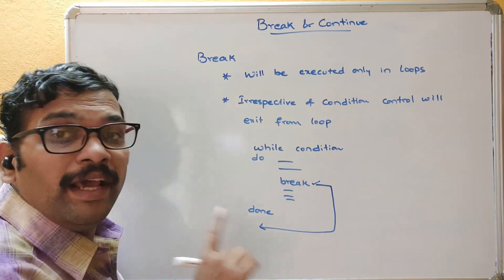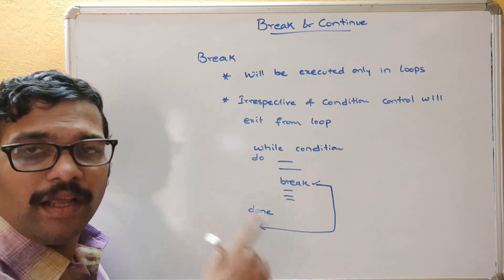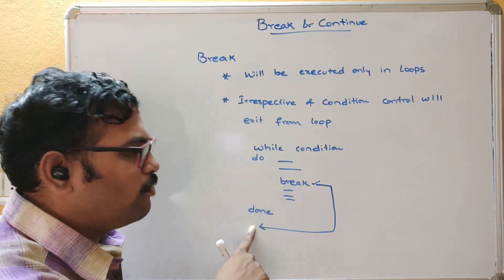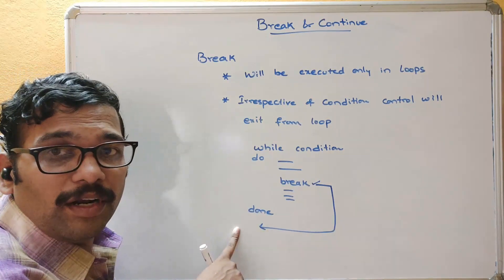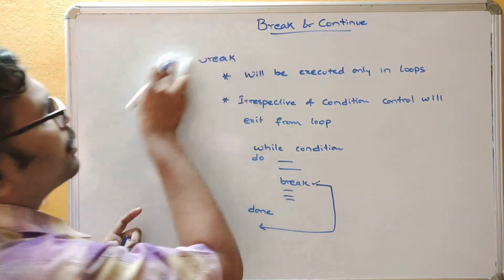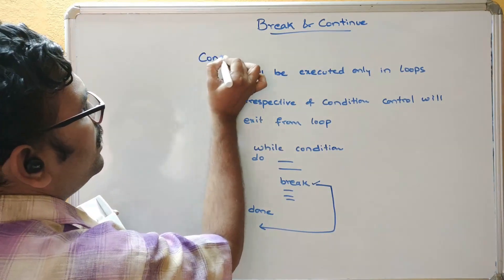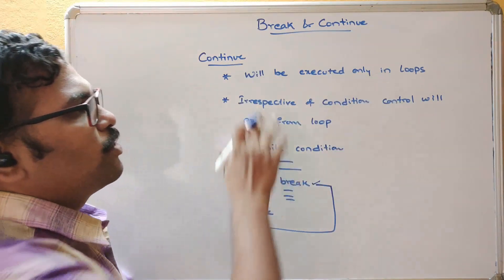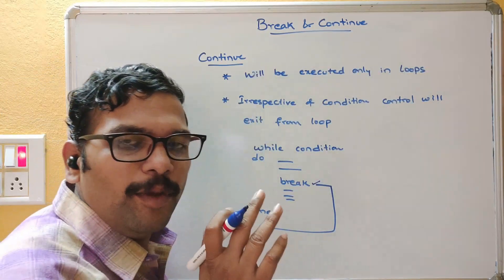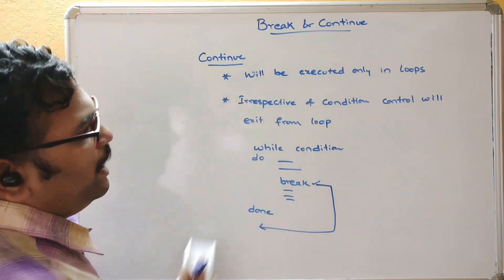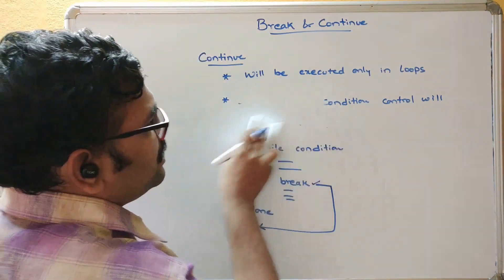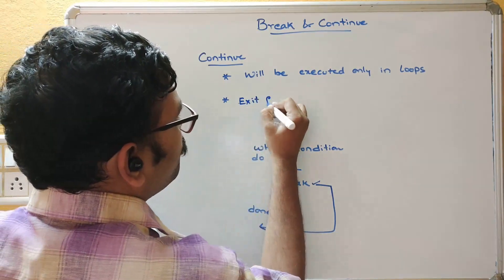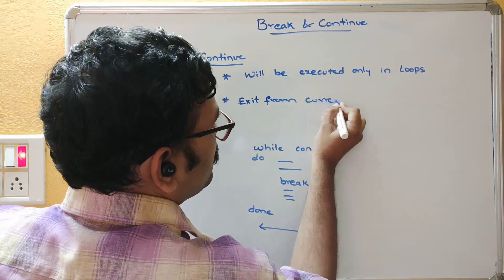Now coming to the continue statement. The continue statement is also executed only in loops — either a for loop, while loop, or do-while. The difference is that it exits from the current iteration only, not from the loop entirely.